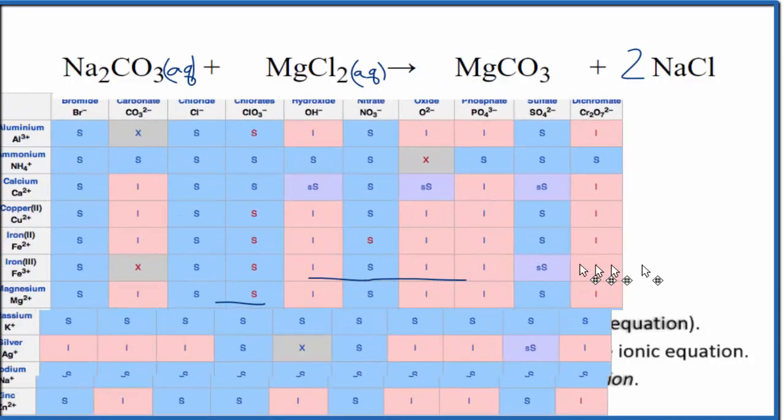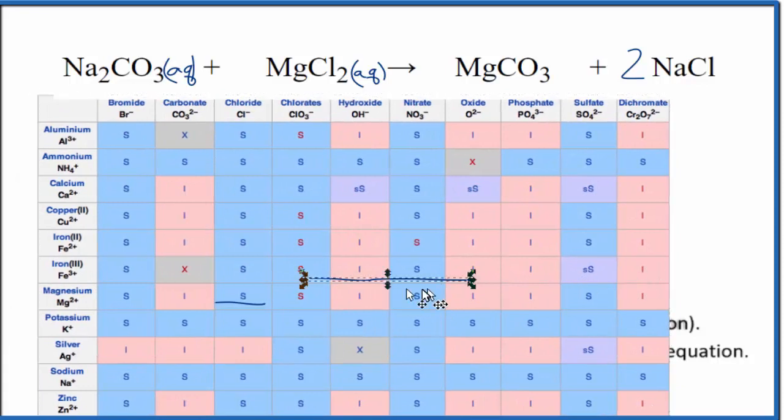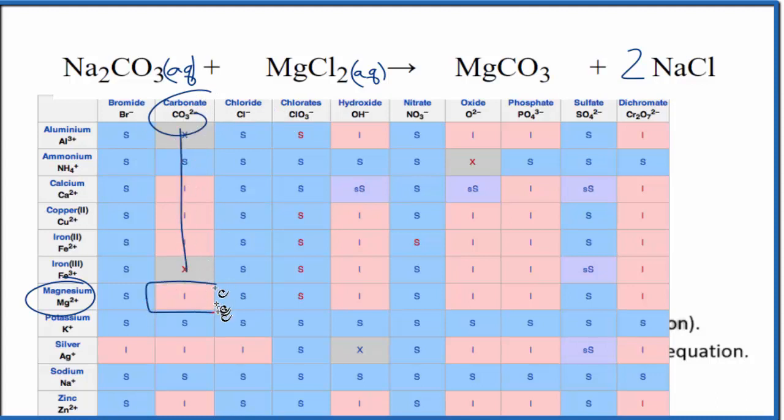So we can look at this solubility table here, and we can find the magnesium right down here, and then this carbonate we're looking at here. Carbonate, we go down from the carbonate. That's insoluble. That's not going to dissolve in water. It's going to be a precipitate. It's going to be a solid at the bottom of the test tube. We're going to write an S for solid right here.